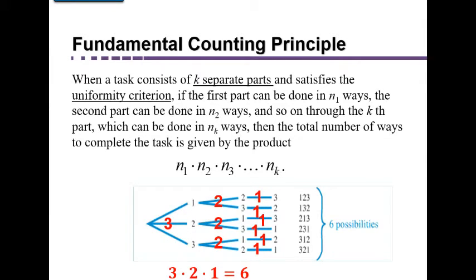When you have uniformity, you can multiply the number of ways to do each part of the task. The fundamental counting principle states: when a task consists of k separate parts satisfying the uniformity criterion, if the first part can be done in n1 ways, the second in n2 ways, and so on through nk ways, then the total number of ways to complete the task is n1 × n2 × n3 × … × nk. It doesn't matter if it's a three-, four-, or five-part task.